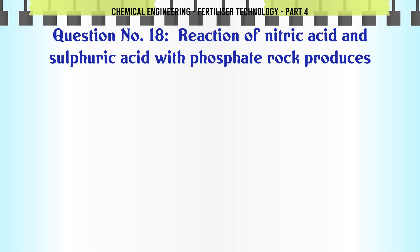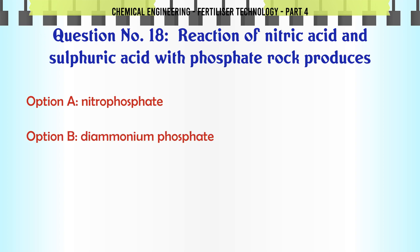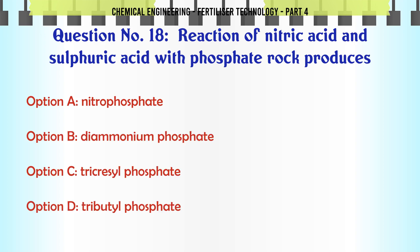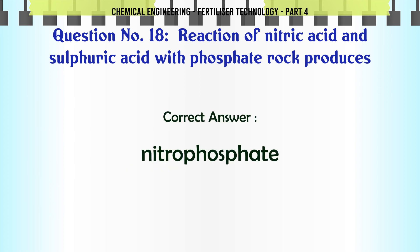Reaction of nitric acid and sulfuric acid with phosphate rock produces: a. nitrophosphate, b. diammonium phosphate, c. tricresyl phosphate, d. tributyl phosphate. The correct answer is: nitrophosphate.